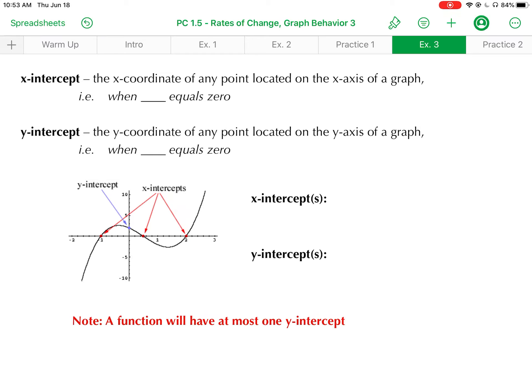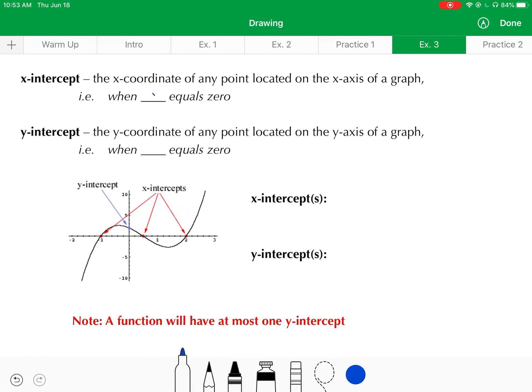Now moving on to the intercepts of a function. This probably is not a new concept to you. The x-intercept of a function would be the x-coordinate of any point that's located on the x-axis of the graph. And if you are a point located on the x-axis, that would mean your y-coordinate, your y-value, equals zero.